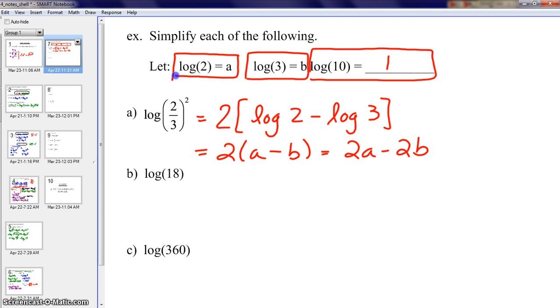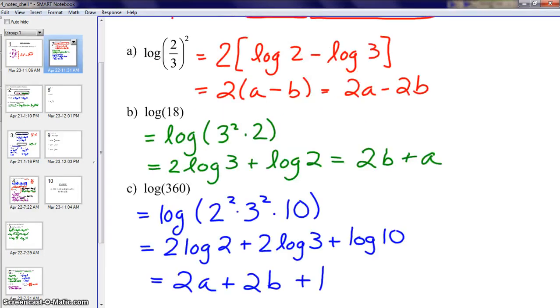Here are your answers for the next two questions. There might be a little variation depending on how you chose to rewrite, say, 18. I did 3 squared times 2. You might have done 3 times 3 times 2. But our answers at the end should certainly be equivalent. So here is your answer for part B, and here is your answer for part C. Take some time and look at that if you need to, but if not, let's move on.